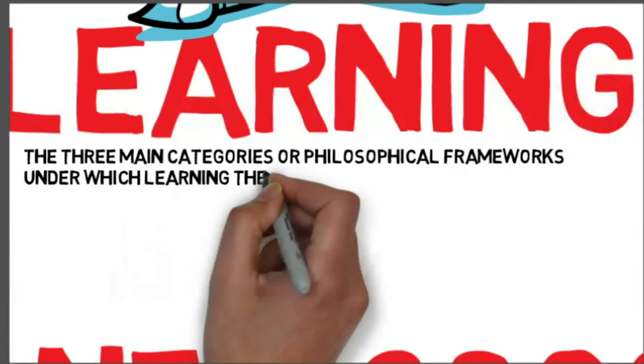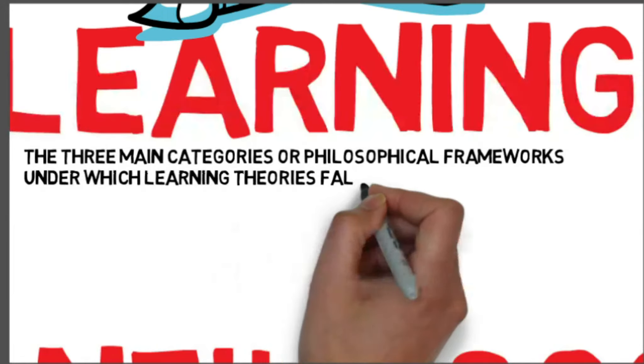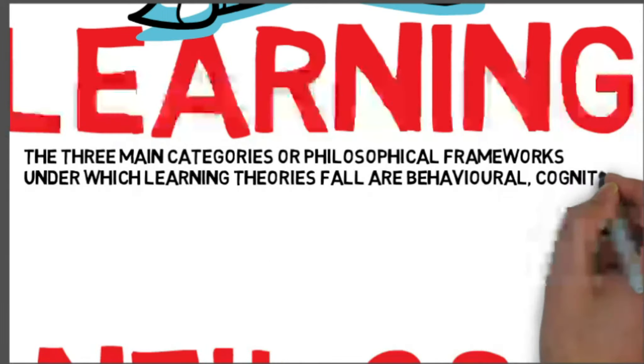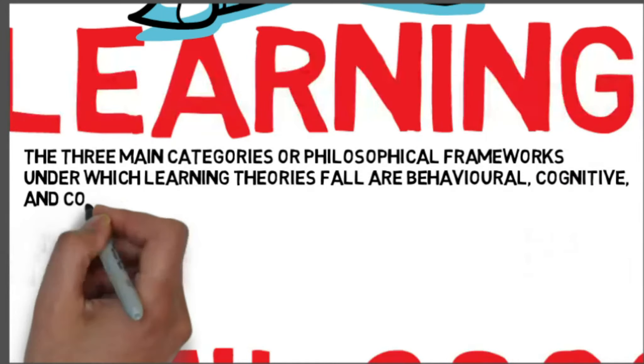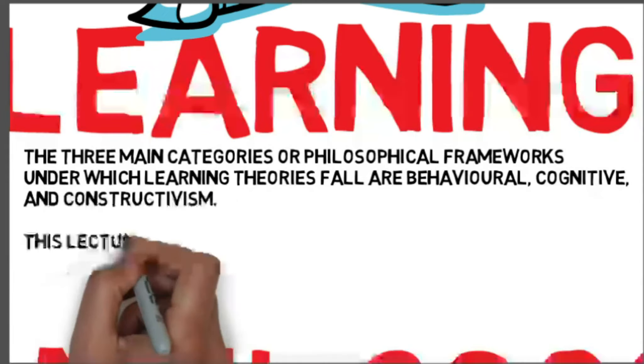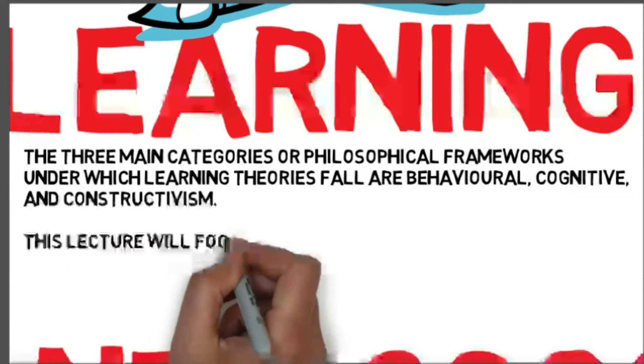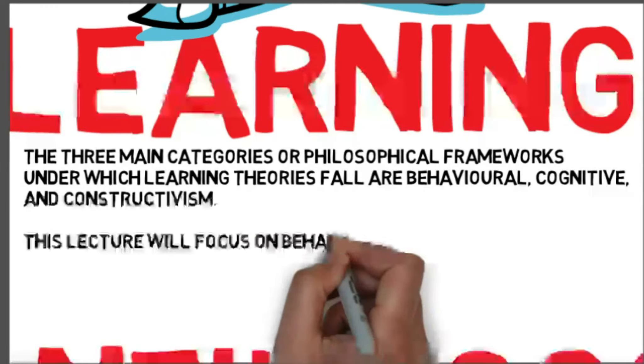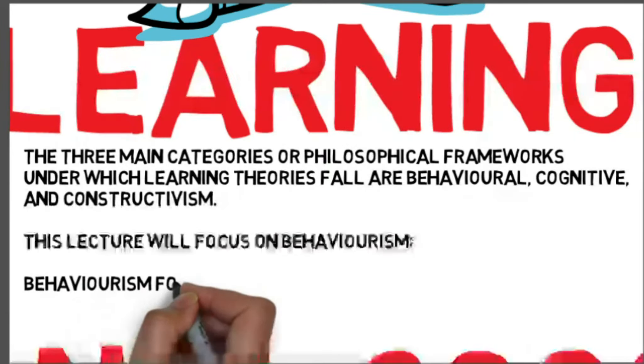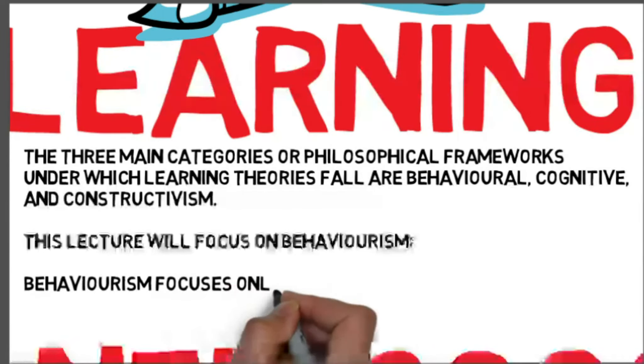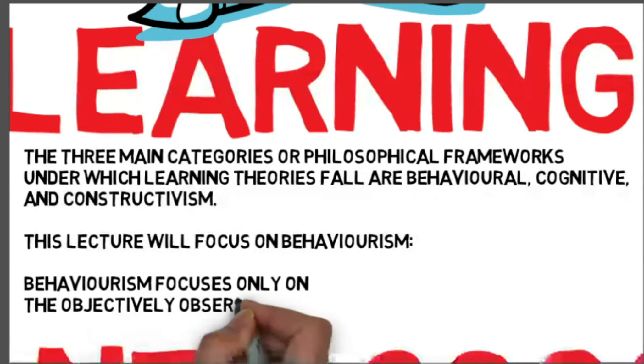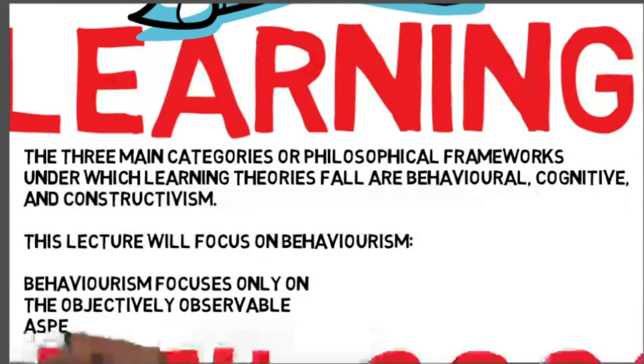The theories don't give us solutions, but they do direct our attention to those variables that are crucial in finding solutions. The three main categories or philosophical frameworks under which learning theories fall are considered to be behavioral, cognitive, and constructivism. Behaviorism focuses only on the objectively observable aspects of learning. Cognitive theories look beyond behavior to explain brain-based learning. Constructivism views learning as a process in which the learner actively constructs or builds new ideas or concepts.